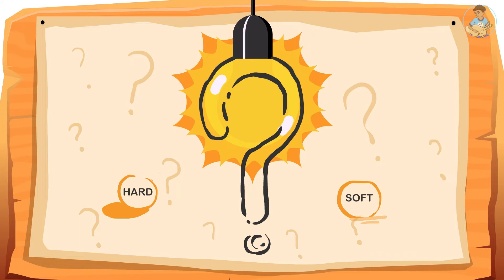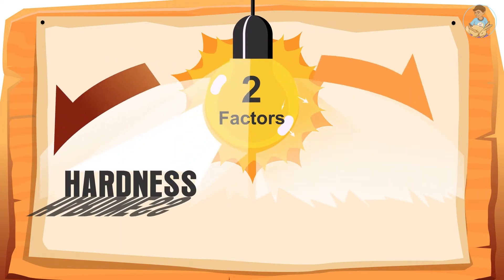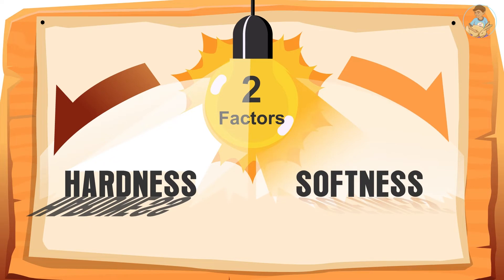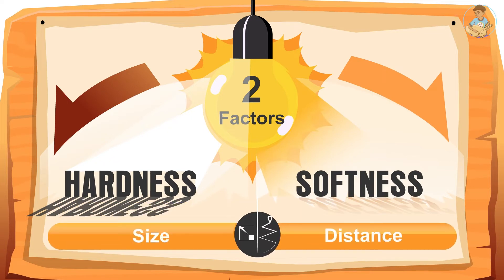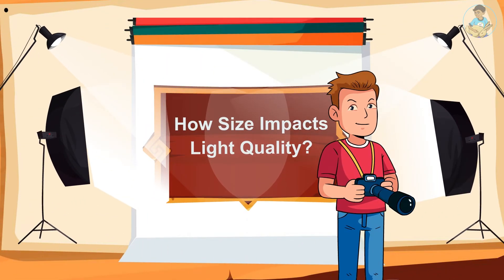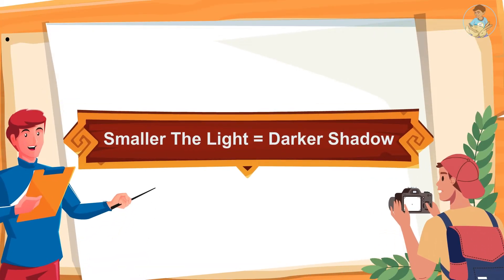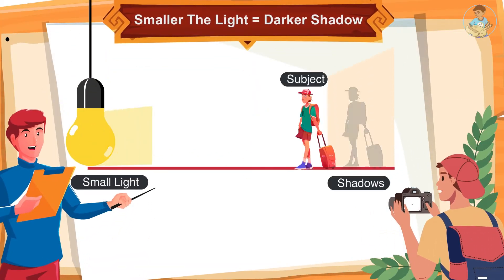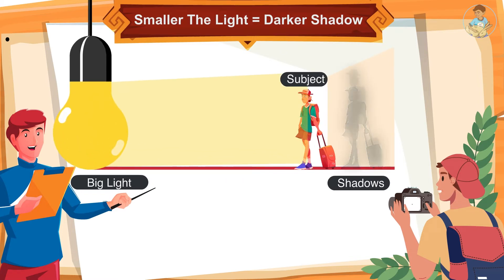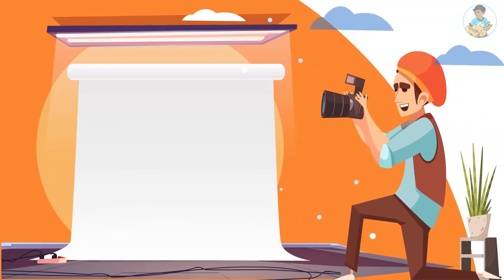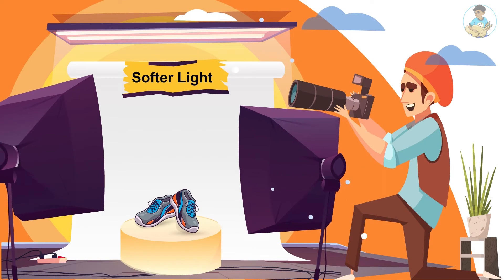So how does light become hard or soft? There are two factors that determine the hardness or softness of light: size and distance in proportion to the photography subject. As a rule, photographers should remember that the smaller the light in comparison to the photography subject, the harder the light will be with darker shadows — and vice versa.